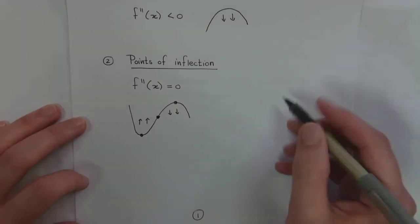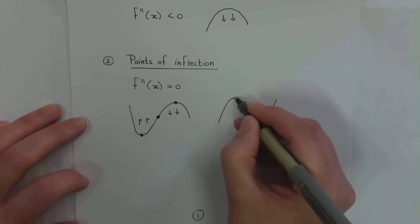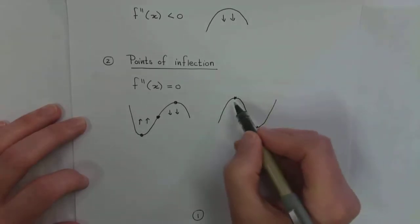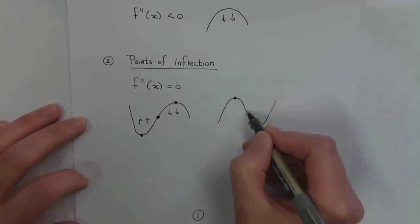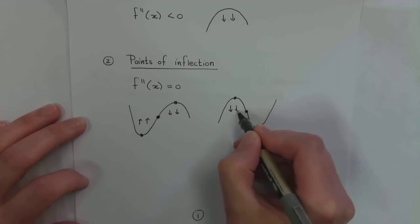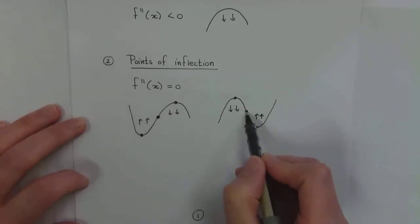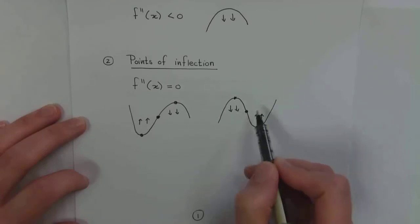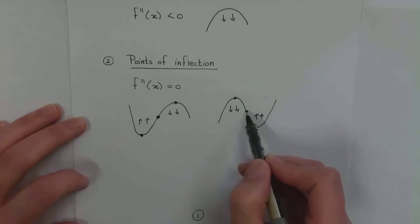The graph could also have the following shape. Again, I have two turning points — that's a turning point, that's a turning point. This is going to be my point of inflection because it goes from concave down to concave up. Please note, in this case, my point of inflection is not a stationary point. My point of inflection is located halfway between these two turning points, but in itself it's not a stationary point.